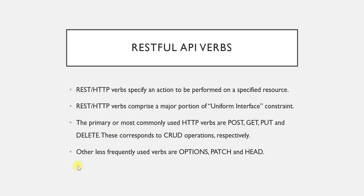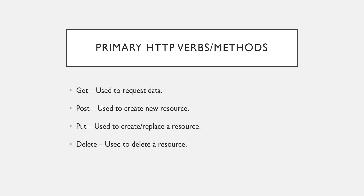There are other verbs that are less frequently used: OPTIONS, PATCH, and HEAD. As we move ahead we will see these less frequently used verbs, but for now we will concentrate on the primary verbs. GET is used to request data — if you want to read any particular resource, you use a GET request. POST is used whenever you want to create something on the server or create a new resource.